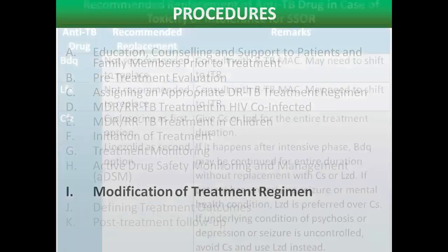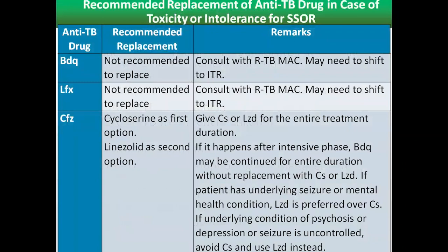Now we discuss modification of the treatment regimen — which drugs can be used as replacements for drugs that the patient cannot tolerate. This table shows the recommended replacement for anti-TB drugs in case of toxicity or intolerance for any of the SSOR drugs. The first column lists the SSOR drug, the second column lists the recommended replacement, and the third column contains remarks and additional information.